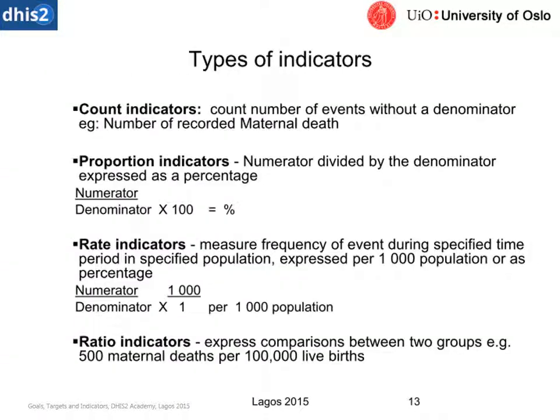There are about four different types of indicators. Count indicators are specific counts — an indicator can be a data element as a numerator over one, which means the data element itself is the indicator. We can have a one-to-one comparison of a data element and the indicator being the exact same thing. A count might also be a total of a number of data elements added together.